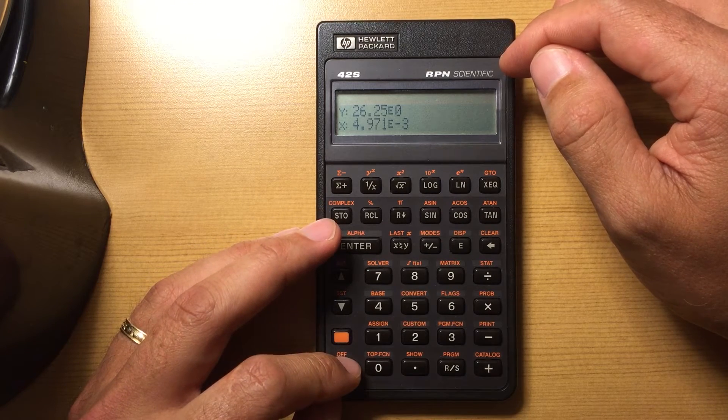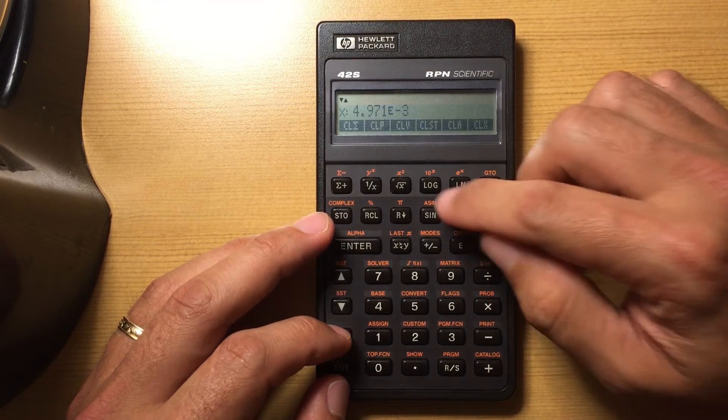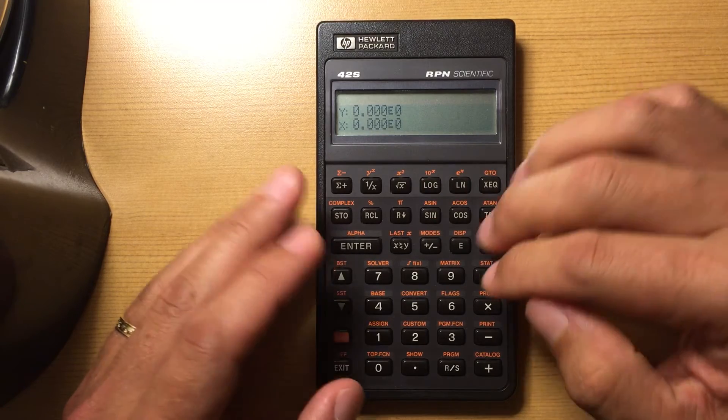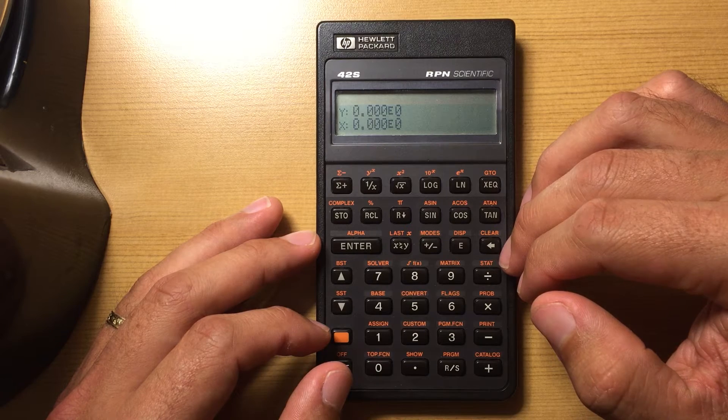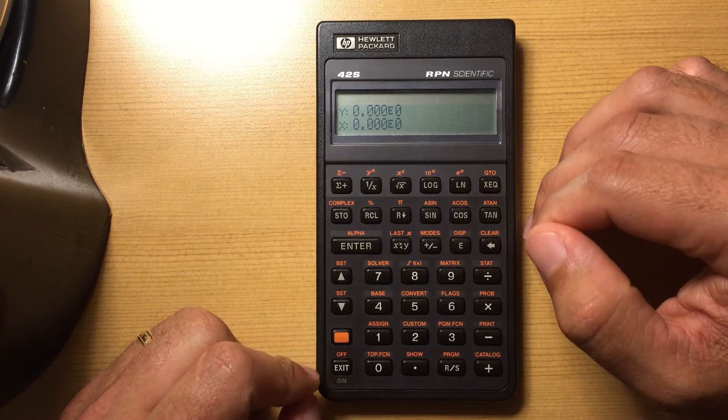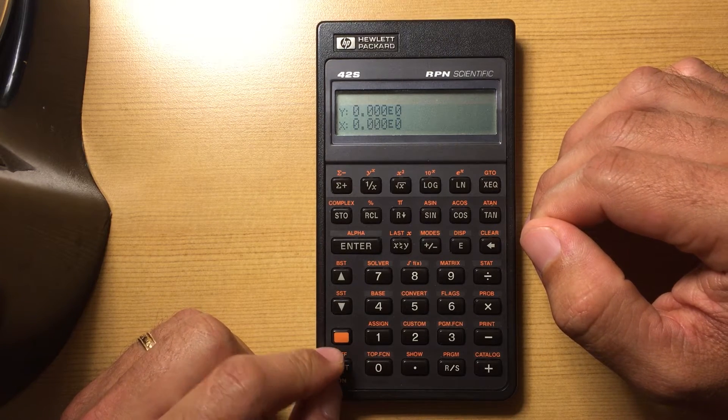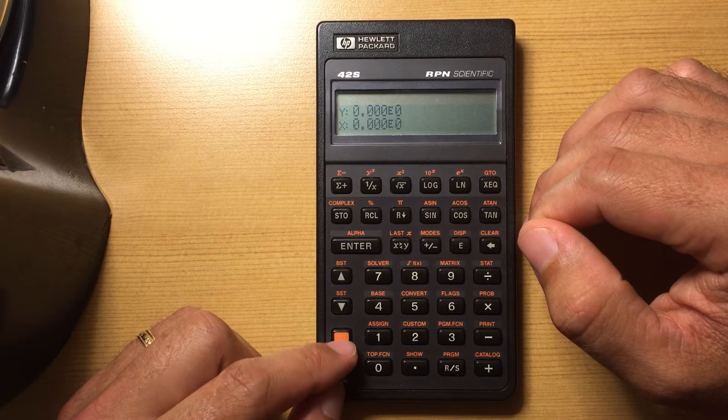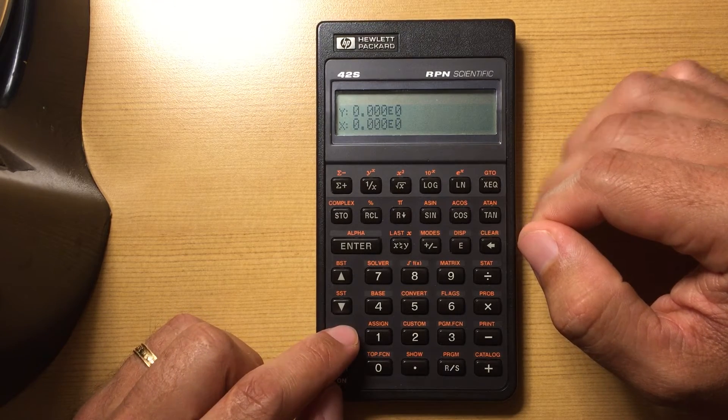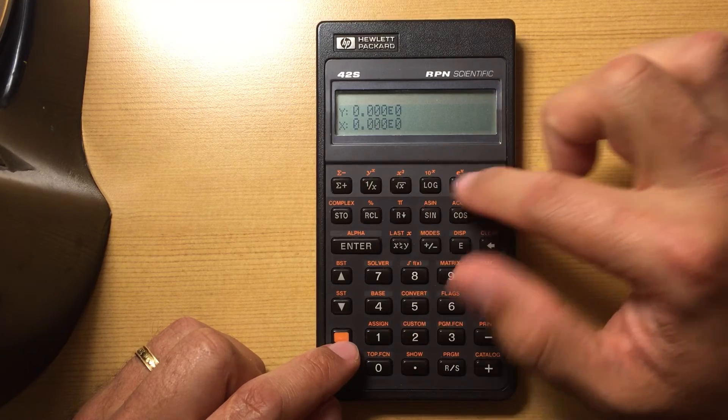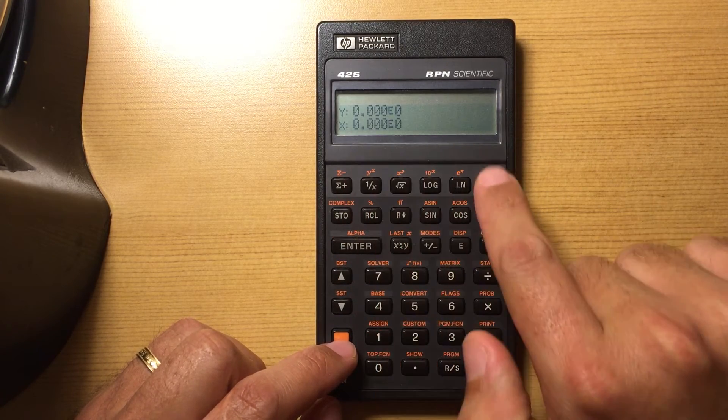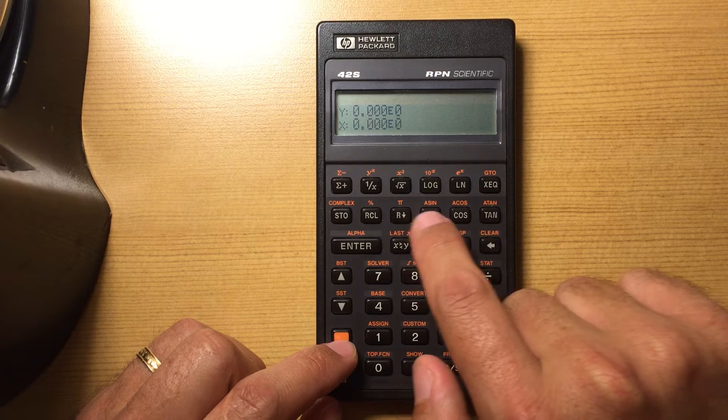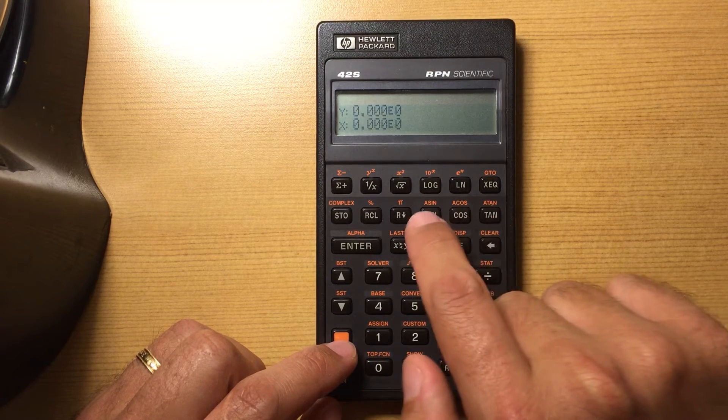But yeah, so this calculator, I really like the simplicity of it. It doesn't have as many buttons as some of the other calculators. It doesn't have as many shift keys as some of the other calculators. But what it has, it utilizes very well. So the shift key here takes you to all of these orange functions. So you got just your basic calculations up here, some of your trigonometric functions here.